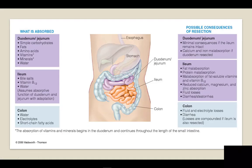As we learned previously, the intestines are necessary for absorption of all nutrients. Depending upon what part of the intestines are removed will determine the consequences we will see in short bowel. This graphic shows us an overview of what is absorbed in each section of the intestines and the possible consequences.